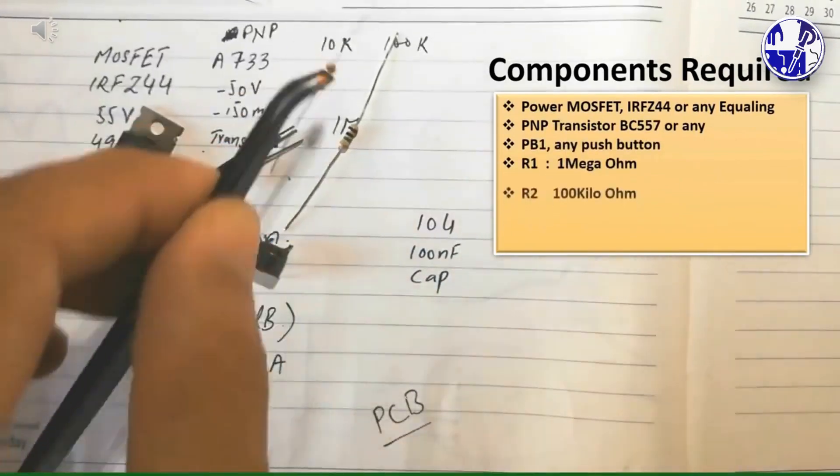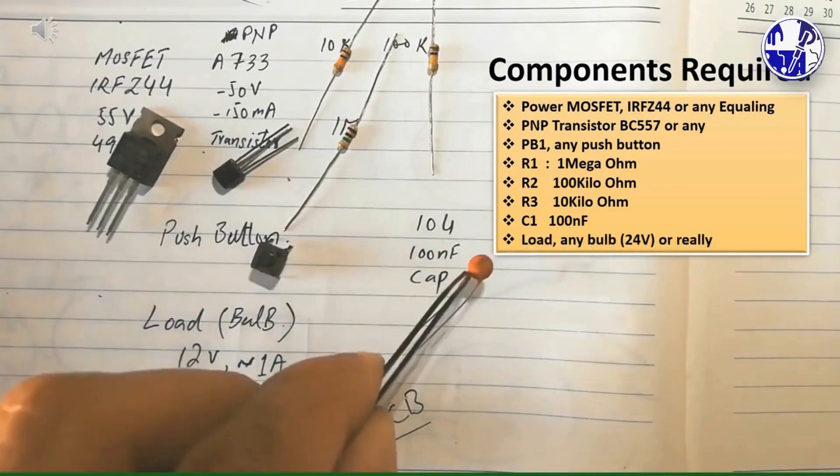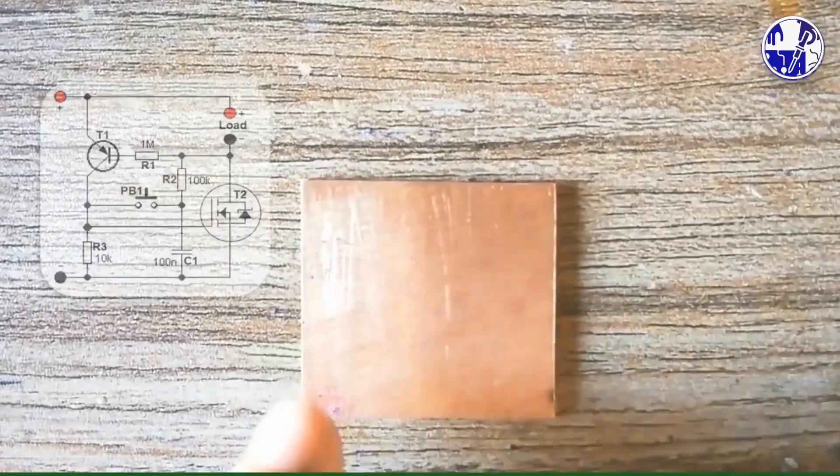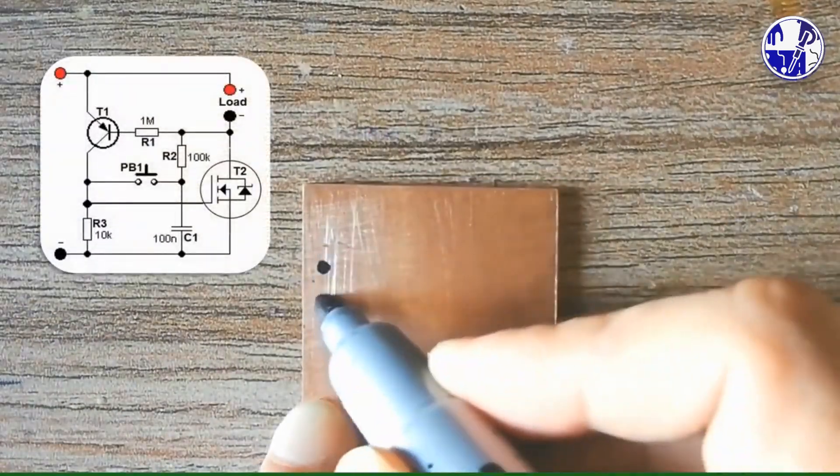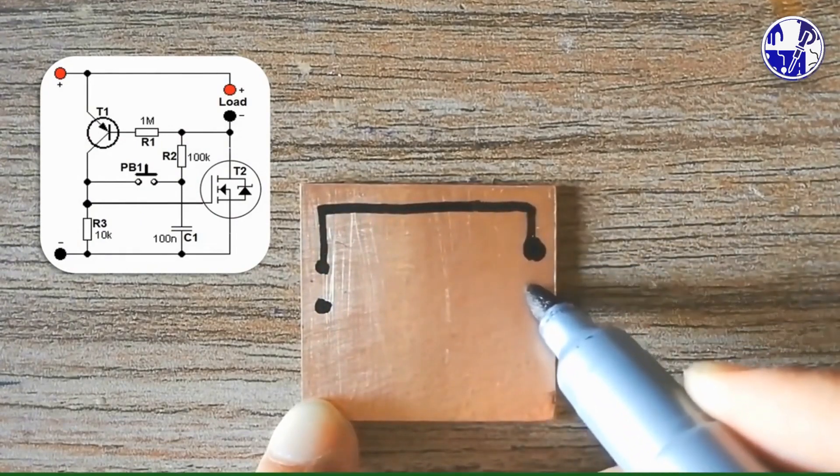Gather all the required components according to the list given. Follow the on-screen diagram carefully and draw the circuit on the copper sheet using a permanent marker.